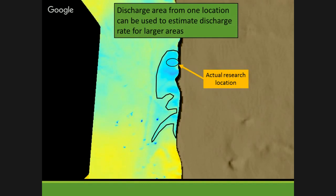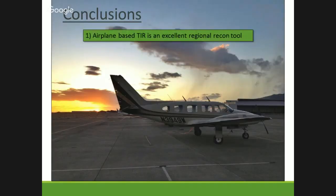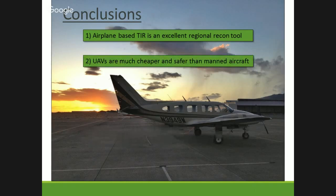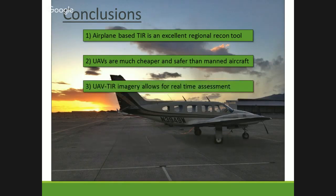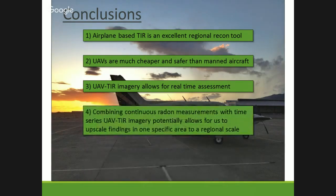In conclusion: airplane-based TIR is an excellent regional-scale tool to find the big picture. UAVs or drones are much cheaper, and I feel way safer standing on the ground flying one than being in a plane in the middle of the night. The combination of UAV with real-time assessment lets us find specific spots, and combining radon with TIR can potentially upscale our findings to other locations — going from surface area to discharge rate and correlating how much excess nutrients are discharging to the coastline.